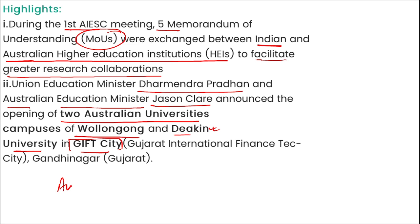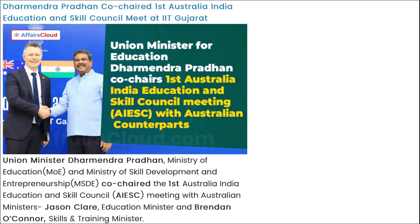Regarding Australia: Prime Minister is Anthony Albanese, capital is Canberra, and the currency is Australian dollar. Dharmendra Pradhan's counterpart from Australia was Jason Clarke.